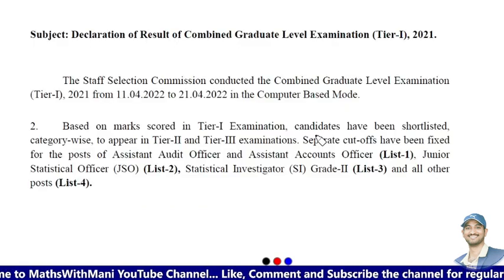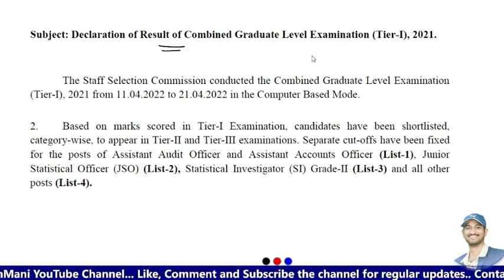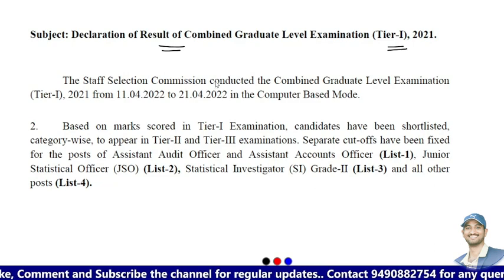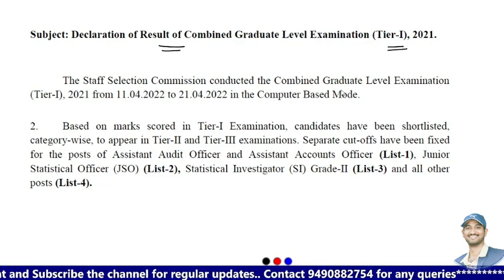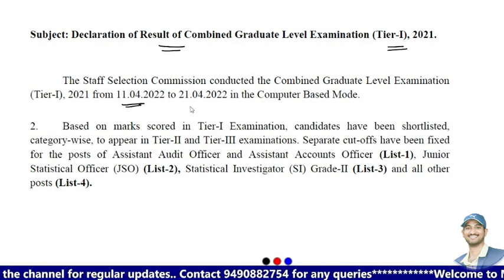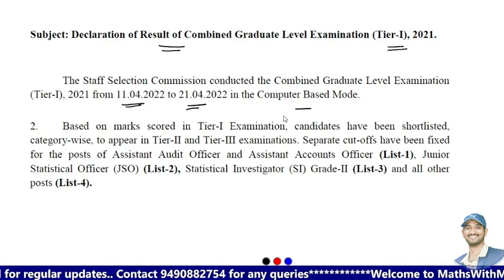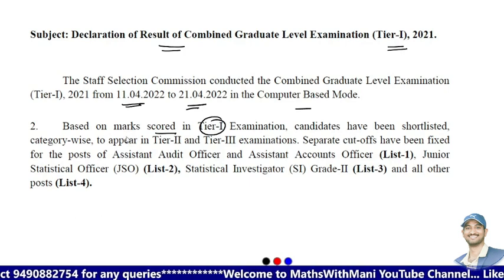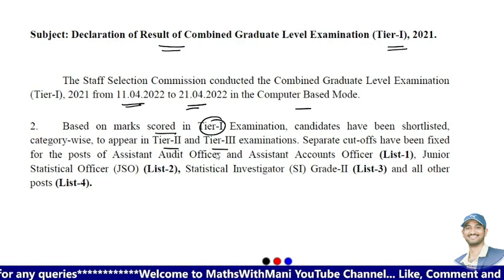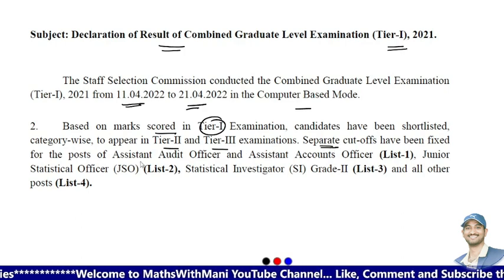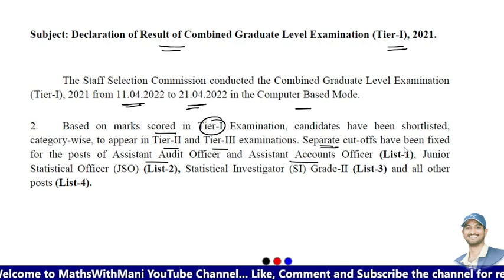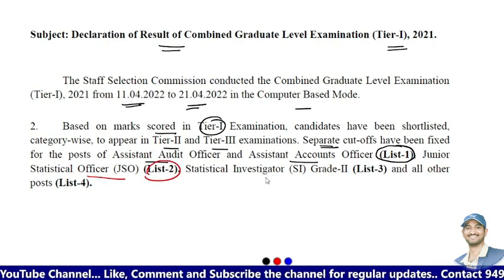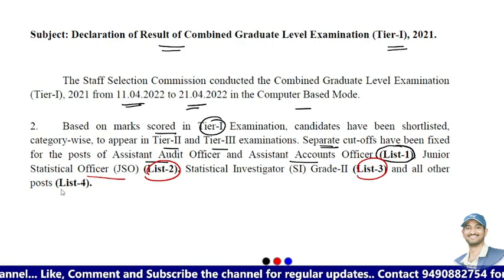This exam was already conducted in April. Declaration of result of Combined Graduate Level Examination Tier 1, 2021. SSC conducted the CGL exam 2021 from 11th April to 21st April in CBT, that is computer-based mode, online mode. Based on the marks scored in the Tier 1 examination, candidates have been shortlisted category-wise to appear in Tier 2 and Tier 3 examinations. Separate cut-offs have been fixed for the post of Assistant Audit Officer and Assistant Accounts Officer (List 1), Junior Statistical Officer or JSO (List 2), Statistical Investigator Grade 2 (List 3), and all other posts (List 4).